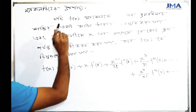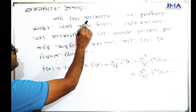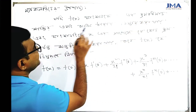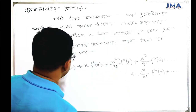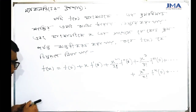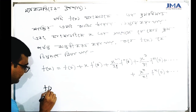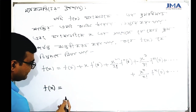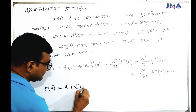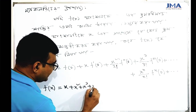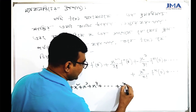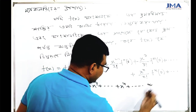What sort of function is f of x? This is x plus x squared plus x cubed plus x to the power 4, continuing with x to the power n out to infinity.